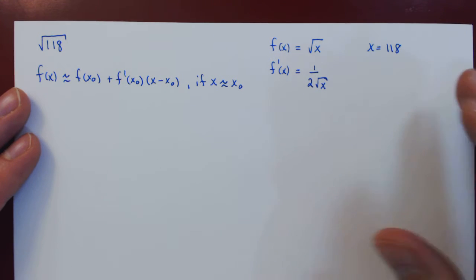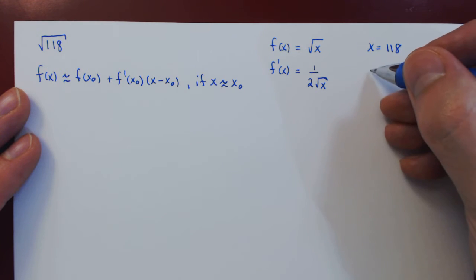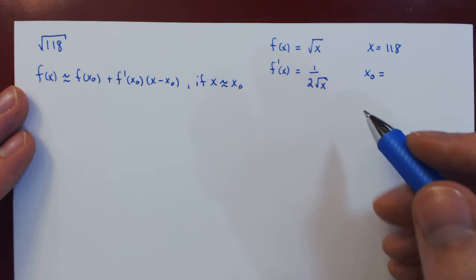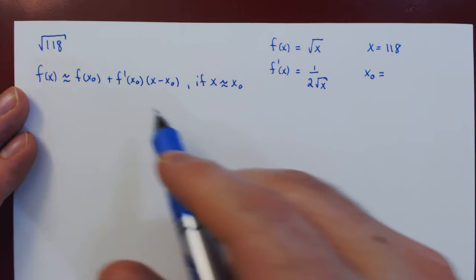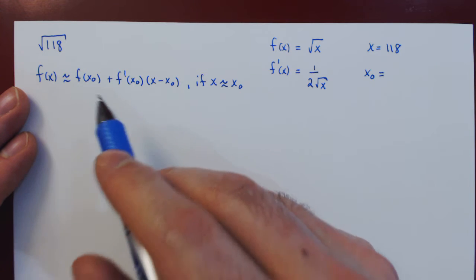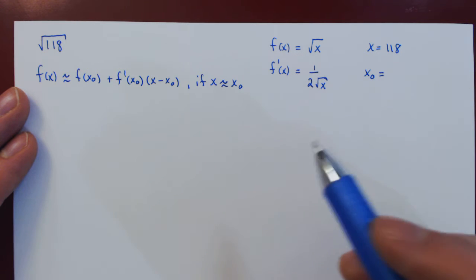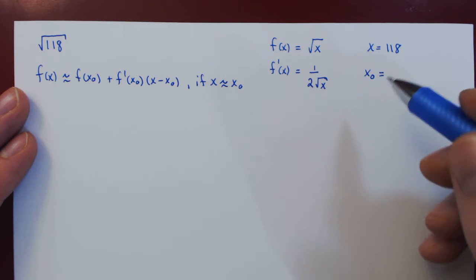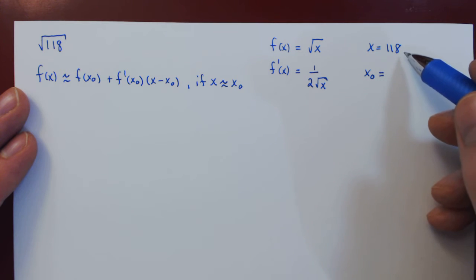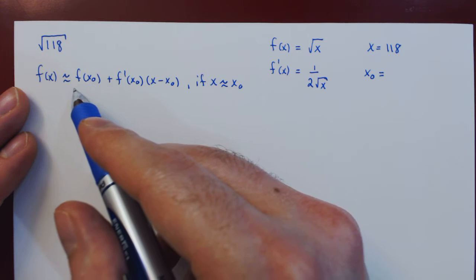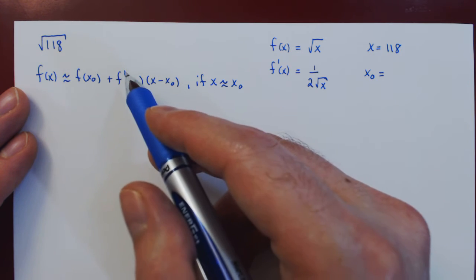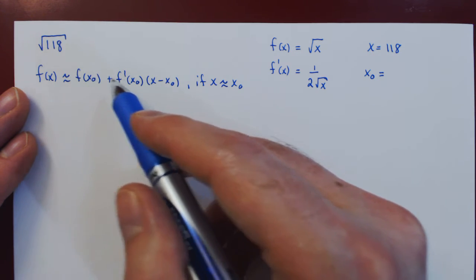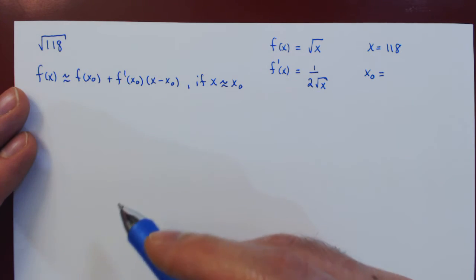The last choice, which is a little bit more interesting, is x₀, the point of tangency. So if we look back, this value must have two properties. The first one, it must be close to the x value, so x₀ must be close to 118. But since we want to evaluate this by hand, we want the derivative of f and f at x₀ to be easily evaluated.